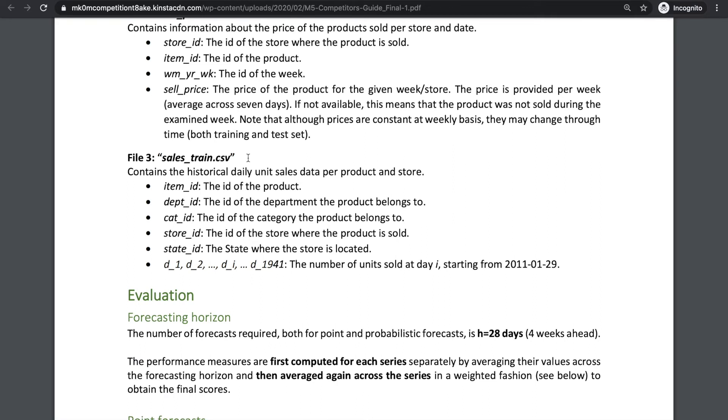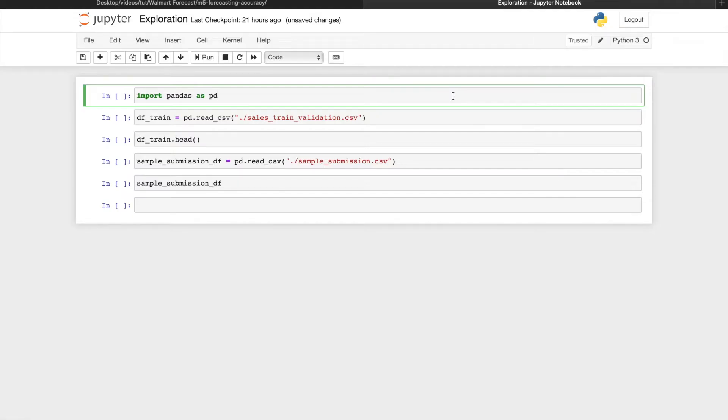The third file, called salestrain.csv, contains the actual historical unit sales per product store combination. I'll open a Jupyter notebook and use the pandas library to take a look at this file.